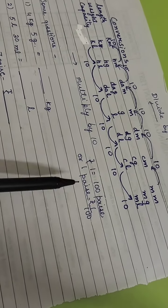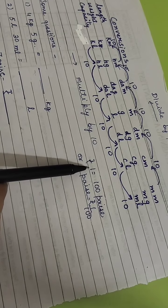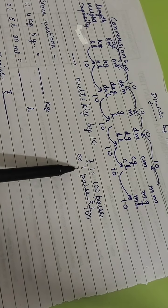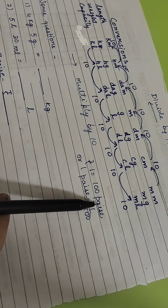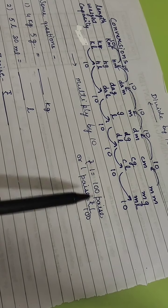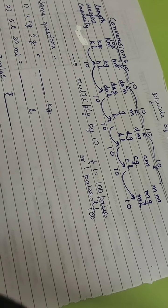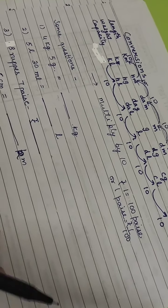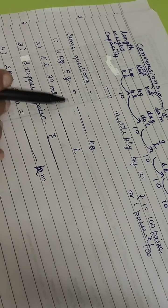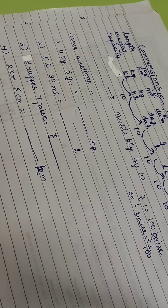One more conversion unit you will encounter is rupees and paisa. You should know that one rupee equals 100 paisa, and if we want to convert one paisa into rupees, then one paisa equals one divided by one hundred rupees.